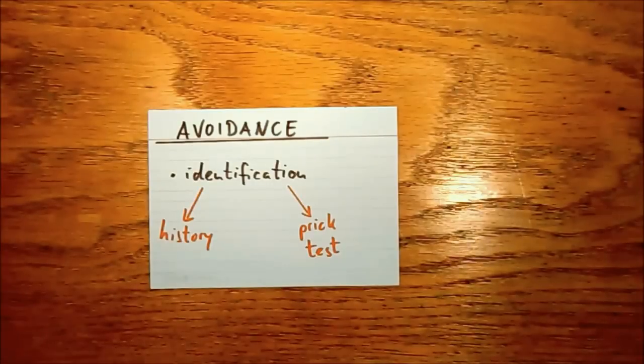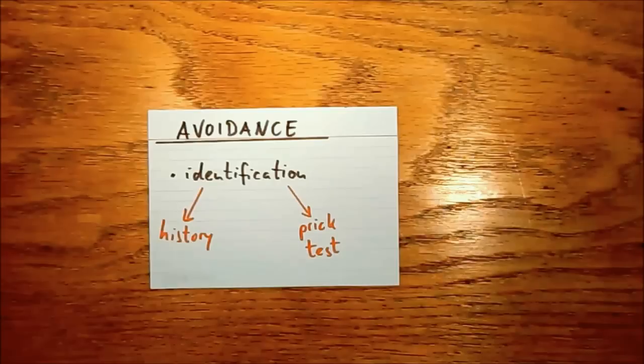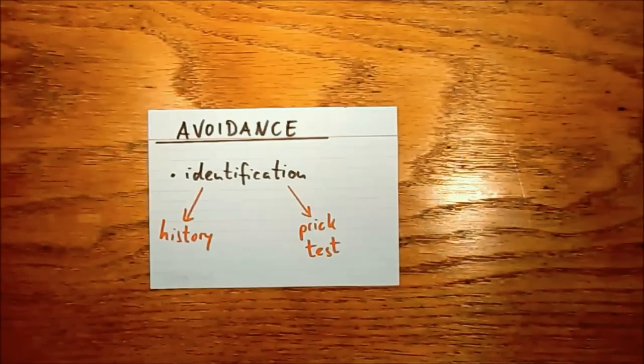Avoiding the trigger is only possible if the patient knows what the trigger is, and so identification is a very important part of anaphylaxis treatment and prevention. The first step is to take a thorough history. In the ER, this is also important when diagnosing anaphylactic shock. We need to know if the patient has been in touch with a potential or a proven trigger.